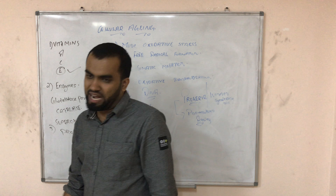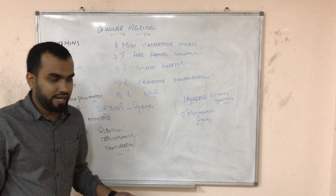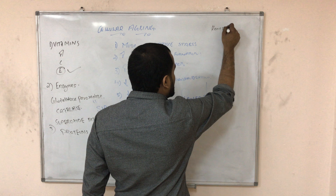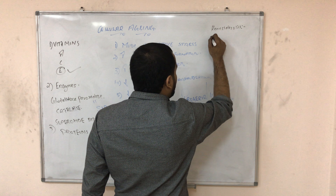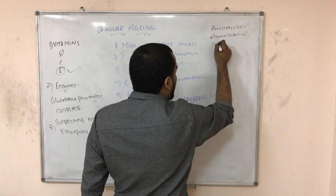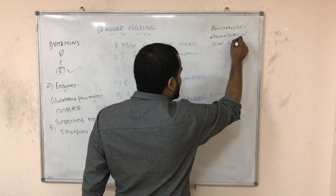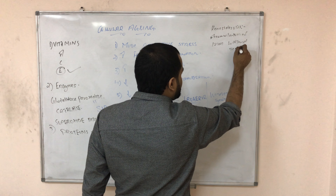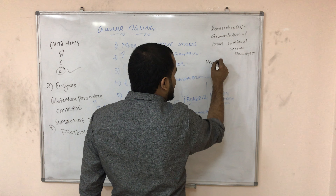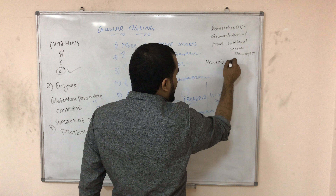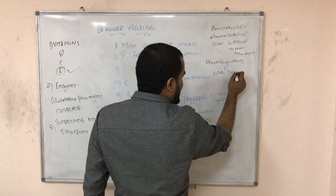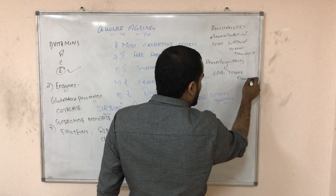When transferrin is absent or delayed in transporting iron, we get conditions related to iron accumulation. Hemosiderosis is the accumulation of iron in organs without tissue damage. Hemochromatosis is also iron accumulation but with tissue damage.